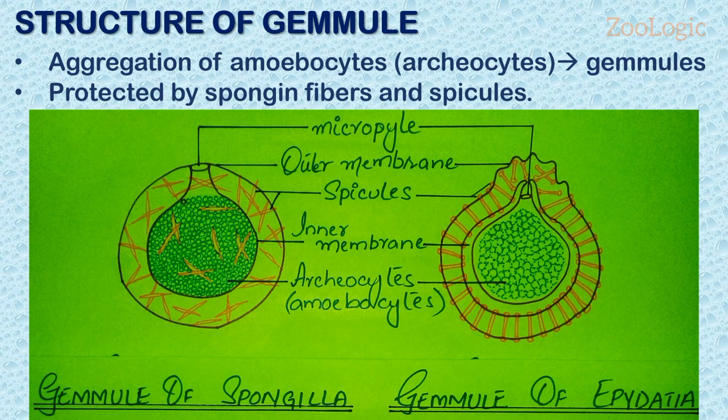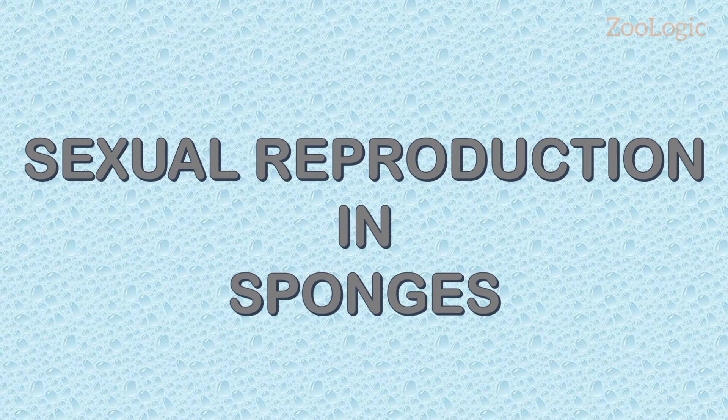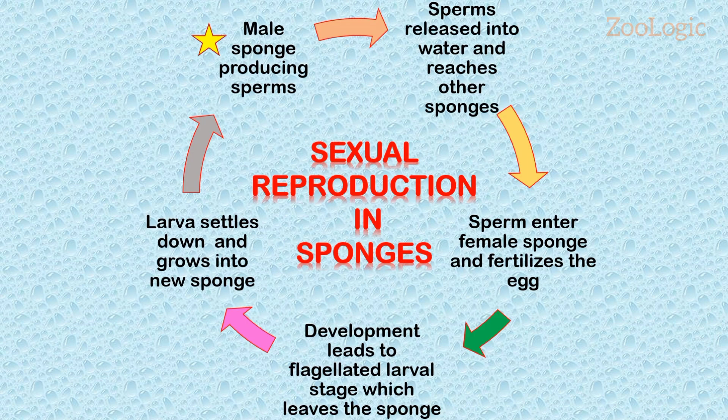Now we will discuss sexual reproduction in sponges. Most sponges are hermaphroditic, but eggs and sperm are usually produced at different times. The sponge that is producing sperm at the time of reproduction is called the male sponge, and the one producing eggs is called the female sponge. The gametes develop from the differentiation of either choanocytes or amoebocytes, depending upon the species of sponge.